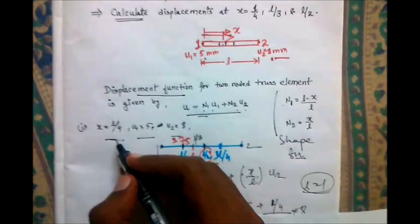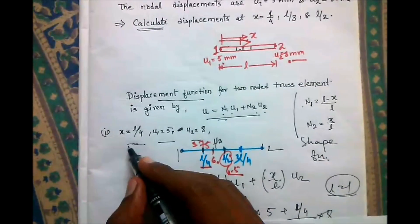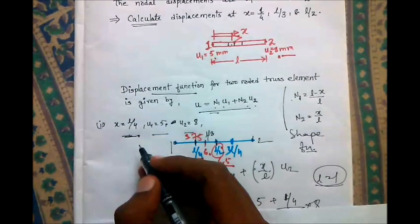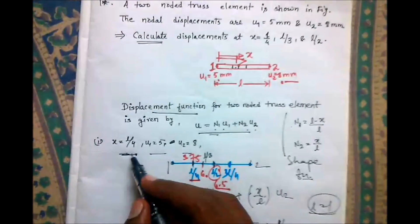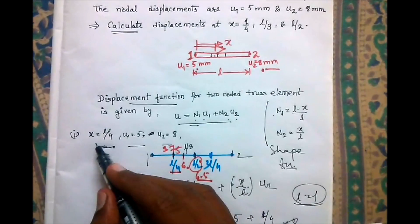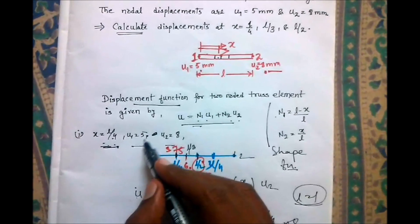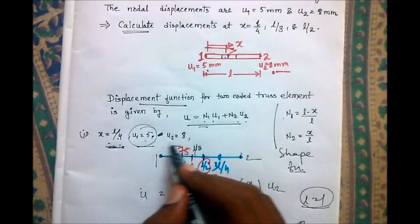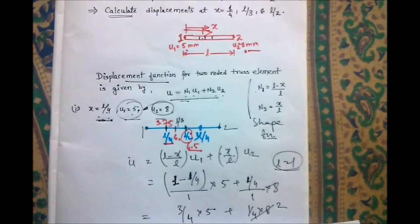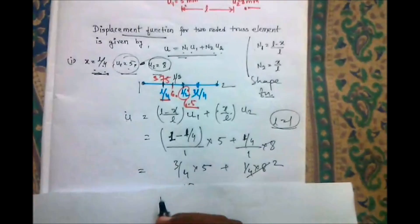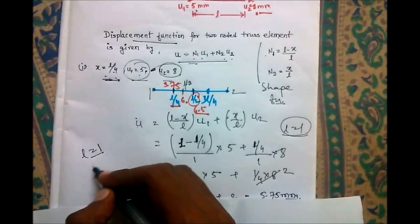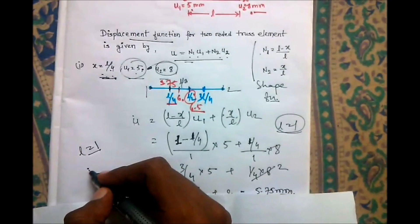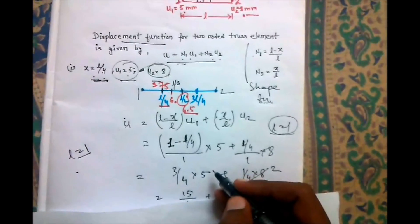Now consider the first case where you have to find displacement at x = l/4 with u₁ = 5 and u₂ = 8. You have this equation. Put the values, considering l = 1 for easier calculations.